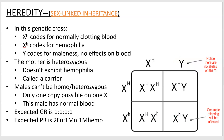Let's go through the cross and see what's up. X-capital-H codes for normally clotting blood, X-lowercase-h codes for hemophilia, and Y doesn't have anything to do with blood — it just turns you into a male. In this cross, the mother is a heterozygous or carrier individual. She doesn't exhibit hemophilia because she's X-big-H and X-little-h, with the big H being dominant and masking the little h. The male has normal blood.